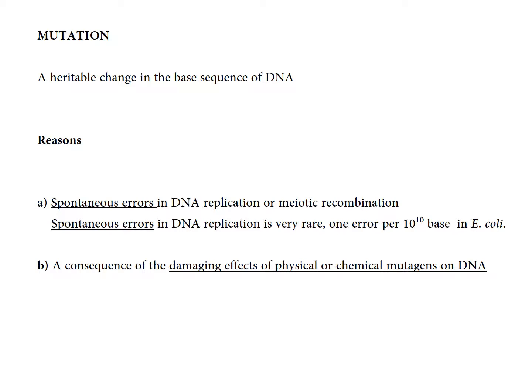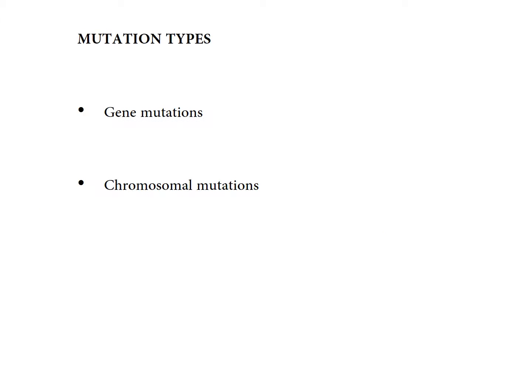Mutation can occur in two ways: it can be spontaneous or it can be induced. Spontaneous mutation is not caused by any external agent — it arises from the normal metabolism of cells, such as errors in DNA replication. These spontaneous errors are rare: approximately one error per 10^10 bases in E. coli. The second type is mutation caused by the damaging effects of physical or chemical mutagens on DNA.